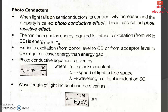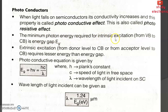Next, photoconductor: when light falls on a semiconductor, its conductivity increases, and this property is called the photoconductive effect, also called the photoresistive effect. The minimum photon energy required for intrinsic excitation from the valence band to the conduction band is the energy gap Eg. For excitation from donor level to conduction band or from valence band to acceptor level, it requires lesser energy than the energy gap.